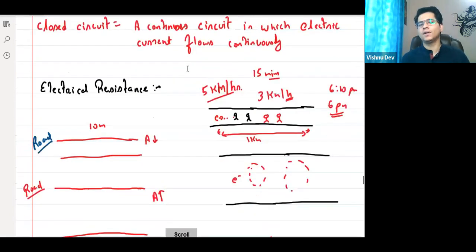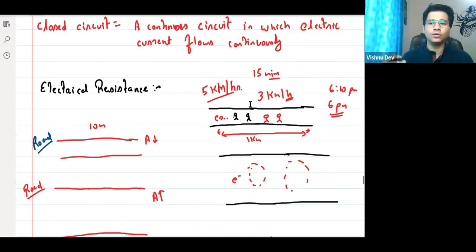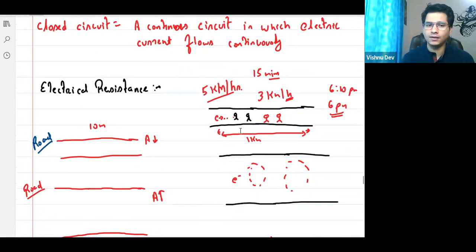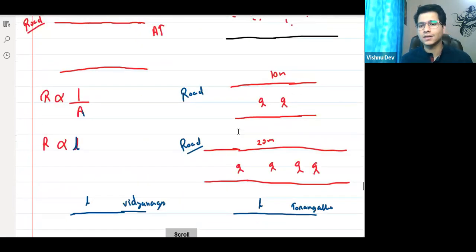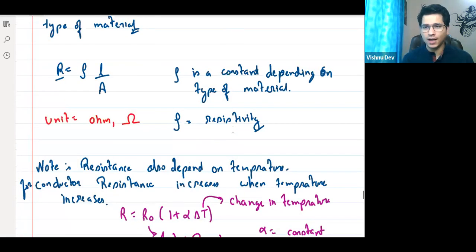We discussed what is electrical resistance and the factors that affect the motion of electrons. Including those factors, we can define resistance — resistance is basically the obstacle or opposition in the flow of current.